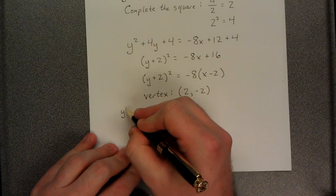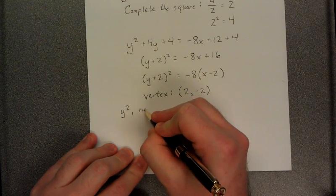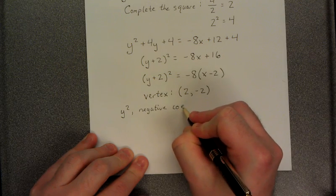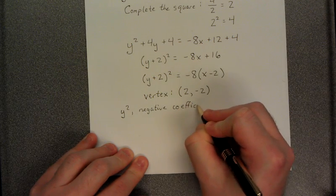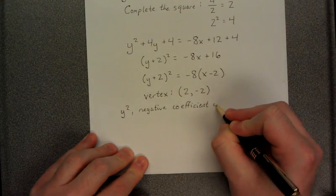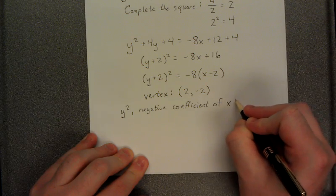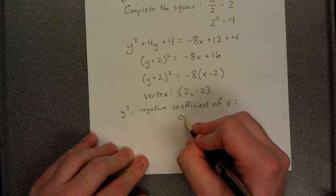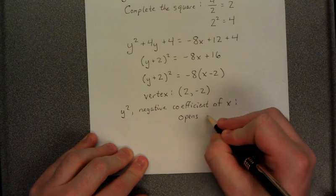So we'll make a note that we have a y squared and a negative coefficient of x. When we combine these two pieces of information, we get that our parabola opens to the left.